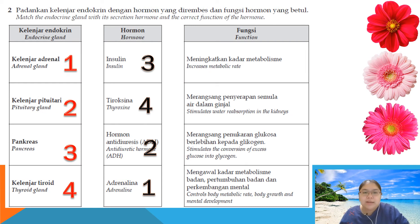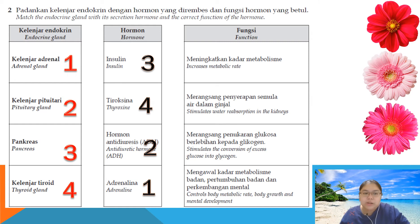You need to draw the lines on the diagram. The first hormone produced is adrenaline from the adrenal gland. The second is ADH from the pituitary gland. Number three is insulin from the pancreas. Number four is thyroxine from the thyroid gland. Now we look at the functions — the first one says 'increase the metabolic rate.'